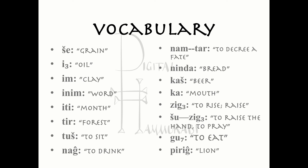Now the vocabulary. She, grain. E3, oil. Im, clay. Inim, word. Iti, with a D outslot, month. Tir, forest. Tush, to sit. Nag, to drink. Namtar, as a compound verb, to decree a fate. Ninda, bread. Kash, beer. Ka, mouth. Zig3, to rise or to raise. Shu-zig3, as a compound verb, means to raise the hand or to pray. Gu7, to eat. And finally, pirig, lion.